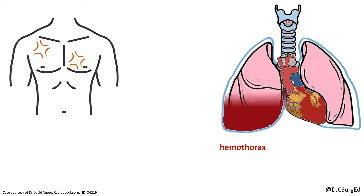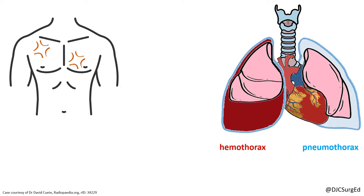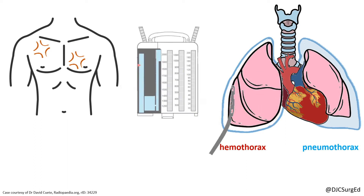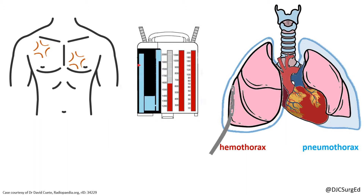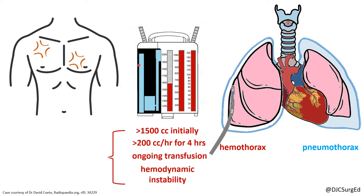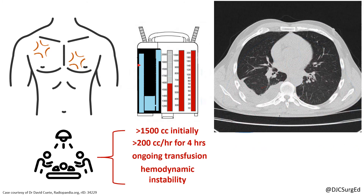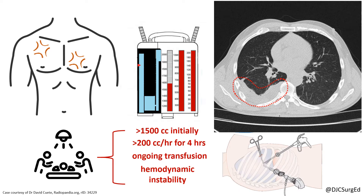Penetrating and blunt thoracic injuries can result in hemothorax or pneumothorax. A hemothorax that drains more than 1,500 cc upon tube placement, greater than 200 cc per hour for 4 hours, has an ongoing transfusion need, or hemodynamic instability requires operative exploration. If there is incomplete evacuation of a hemothorax seen on subsequent imaging, the preferred management is a VATS washout.